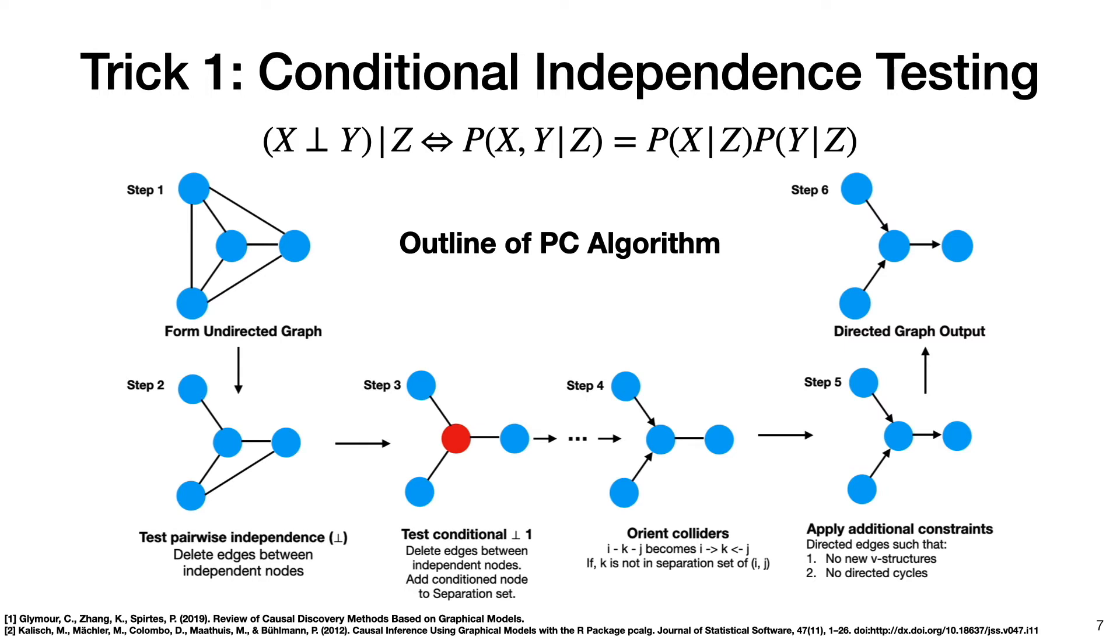So we have a node for each variable in our data set, and we connect undirected edges between each of these nodes. In step two, we do pairwise independence tests. So we do an independence test between every possible pair of variables. And if two variables are independent, we delete the undirected edge between them. The third step are conditional independence tests. So basically, we do the same thing. However, we pick a variable to condition on. Then if two variables are found to be conditionally independent, we delete the edge between them, and we add that conditioned node to the separation set.